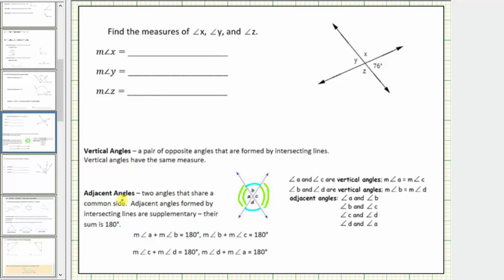Adjacent angles are two angles that share a common side. Adjacent angles formed by two intersecting lines are also supplementary, meaning the sum of their measures is 180 degrees. We have several pairs of adjacent angles that are also supplementary.